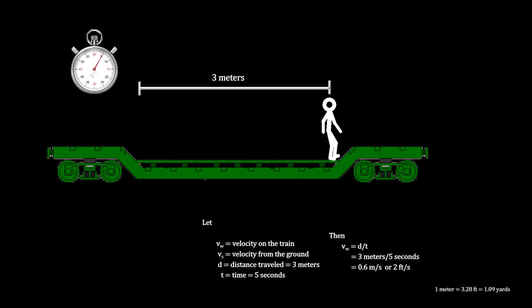Now we just measure the length of the line and divide by the time. In this example, he went 3 meters in 5 seconds, for a speed of 0.6 meters per second.